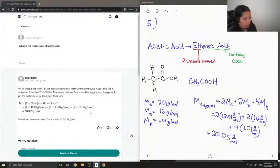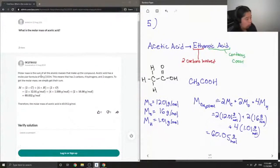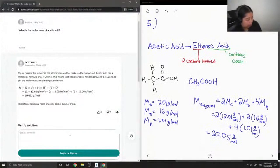Let's see what our junior tutor said. Molar mass is the sum of all the atomic masses that make up the compound. Acetic acid has a molecular formula of CH3COOH. This means that it has two carbons, four hydrogens, and two oxygens. To get the molar mass, we simply get their sum. They ended up getting the same total of 60.05 grams per mole. So this solution is correct.